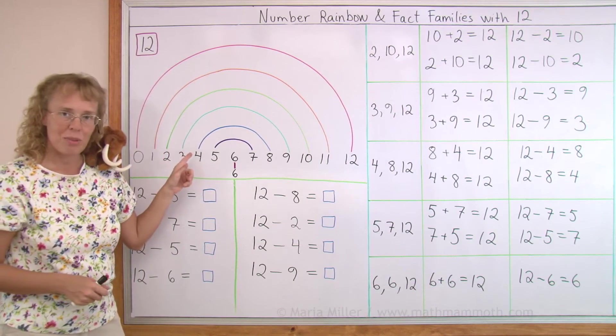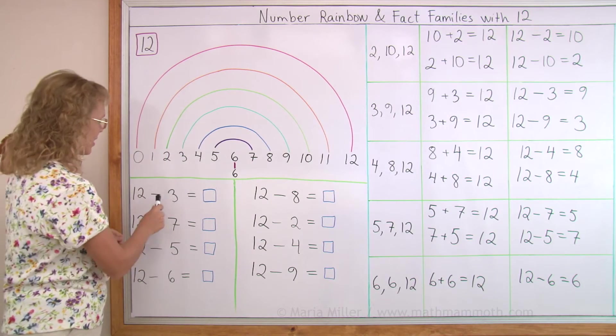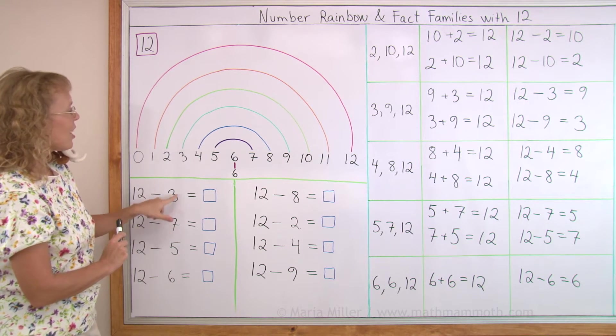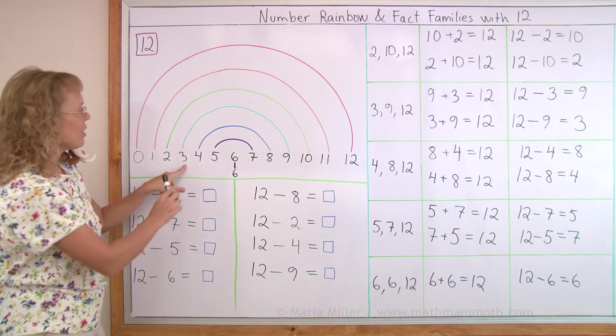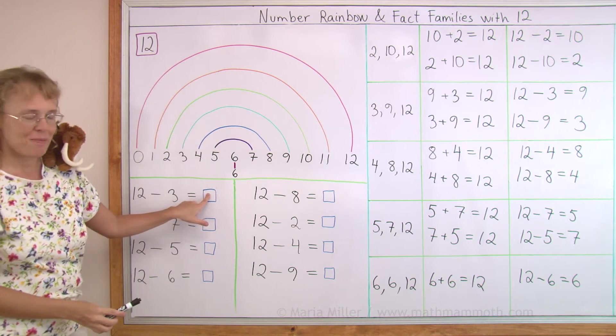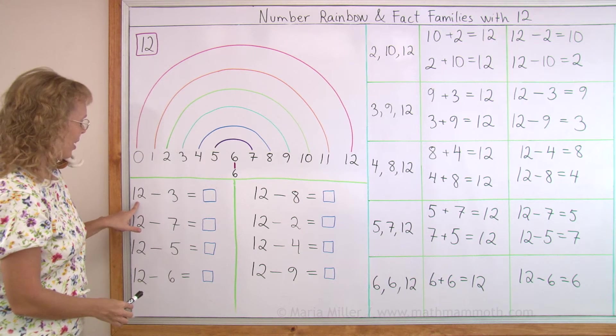So, to use the number rainbow with subtraction problems that start with 12. For example, 12 minus 3. Find 3 in the number rainbow. Follow the arc and find 3's partner. It's 9. So 9 goes here. 3 and 9 make 12.